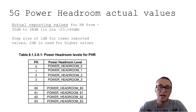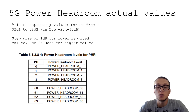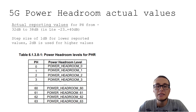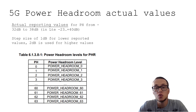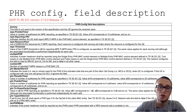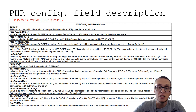There are special tables in 3GPP that map actual values to reporting values. In 5G, actual power headroom values range from minus 32 dB to positive 38 dB. In LTE it is minus 23 dB to plus 40 dB — slightly different. The step size is 1 dB for lower reported values and 2 dB for higher values. You can find the full mapping in 3GPP specifications.